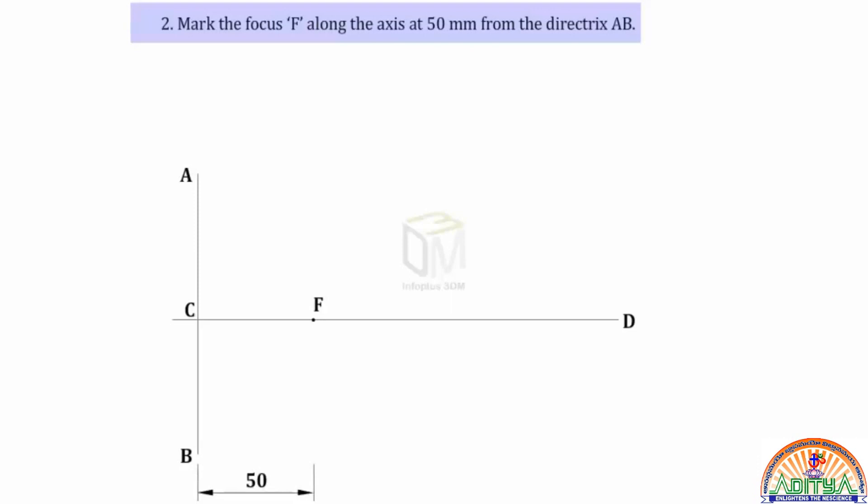Divide CF into 5 equal parts and mark the third division from the directrix as vertex V. Draw a vertical line through the vertex at point E such that VE equals VF. Now join C and E and extend it.